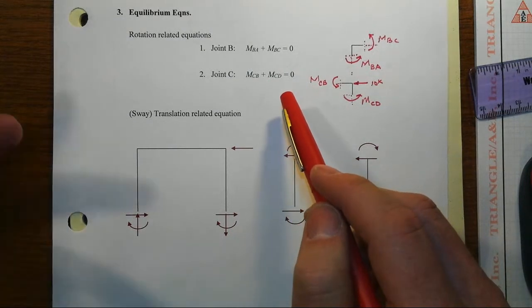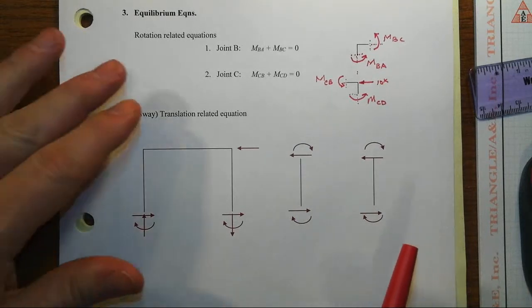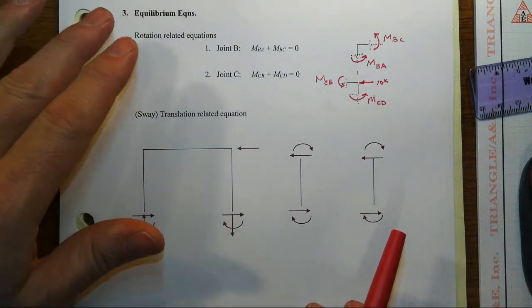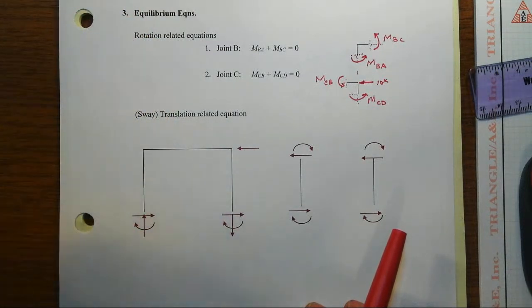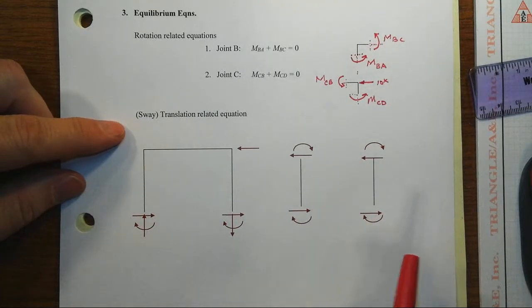We come down, now we've got it, we only have two equations, we've got three unknowns: theta B, theta C, and then a chord rotation term. We need another equation of equilibrium, and it's going to be one that involves that chord rotation.